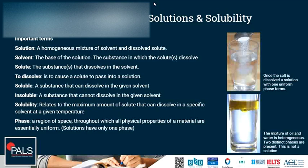A substance is soluble when it can dissolve in the given solvent, and insoluble when it cannot dissolve in the given solvent. Solubility relates to the maximum amount of solute that can be dissolved in a specific solvent at a given temperature. A phase is a region of space throughout which all physical properties of a material are essentially uniform, and all solutions have only one phase.